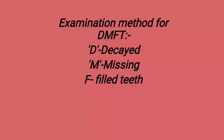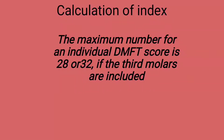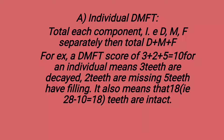Examination method for DMFT: D for decayed, M for missing, and F for filled tooth. For calculation, the maximum number of an individual's DMFT score is 28, or 32 if third molars are included. For individual DMFT, D, M, and F are separately taken and then totaled. For example, a DMFT score of 3 (decayed) + 2 (missing) + 5 (filled) equals 10 for an individual.